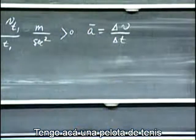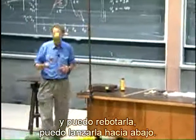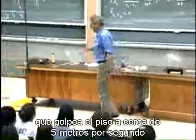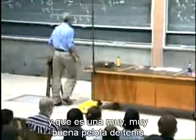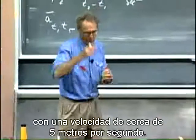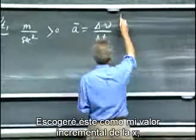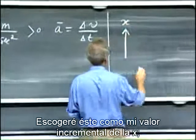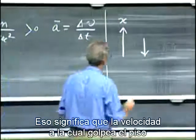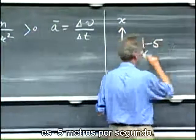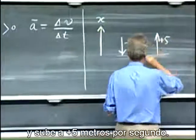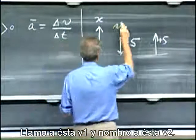I have here a tennis ball, and I can bounce it. I can throw it down, and let's assume for simplicity that it hits the floor at about five meters per second, and that it's a very good tennis ball that bounces back with a velocity of about five meters per second. I will choose upward to be my increasing value of x, so it hits the floor — meaning the velocity at which it hits the floor is minus five meters per second. It bounces off and goes up with plus five meters per second.